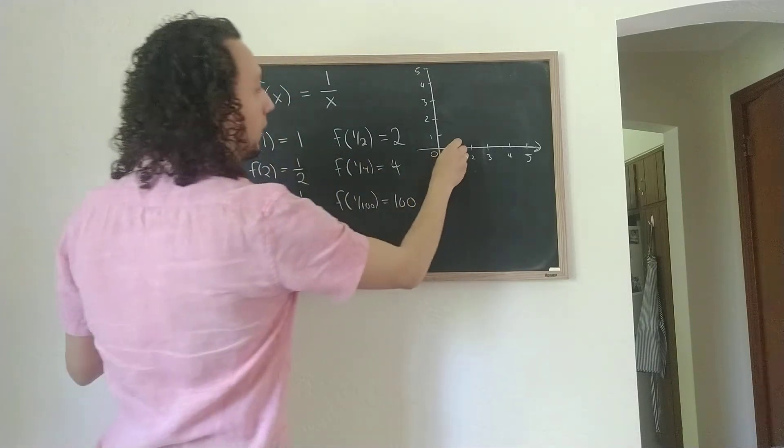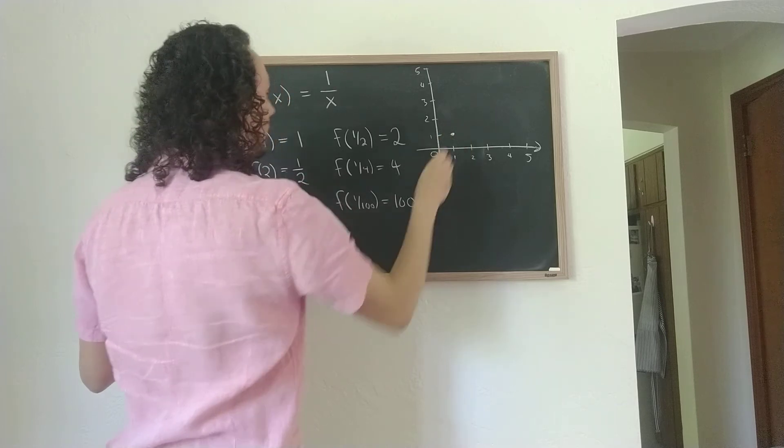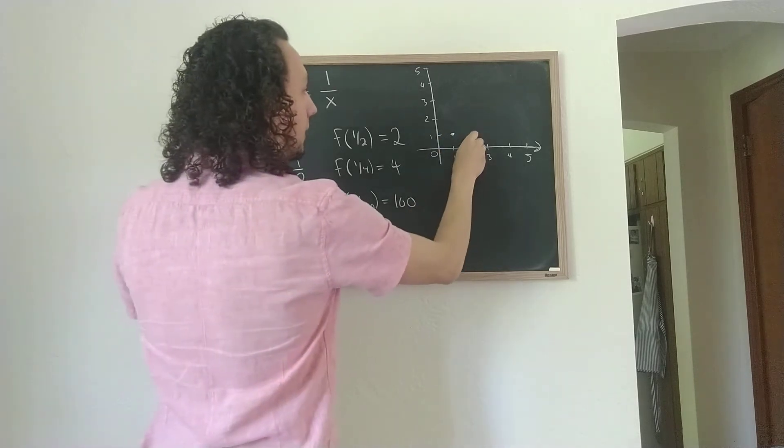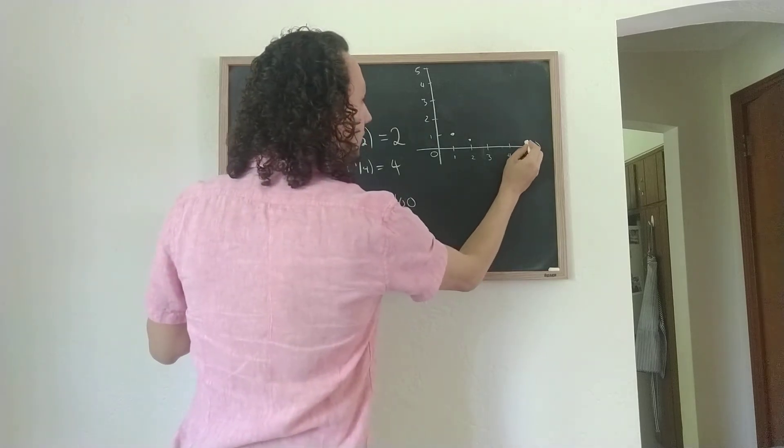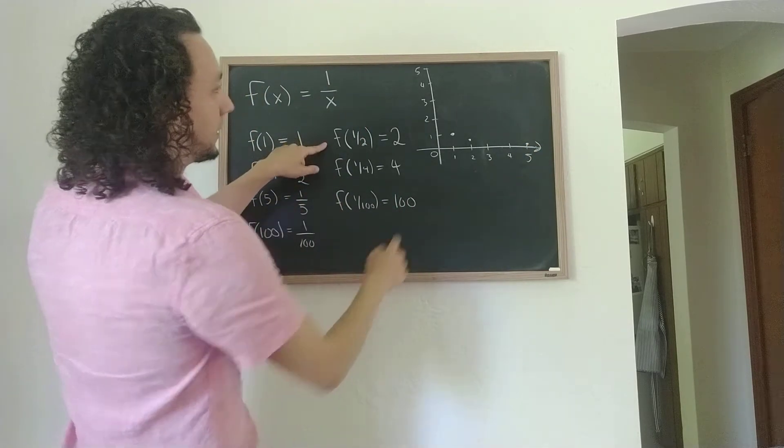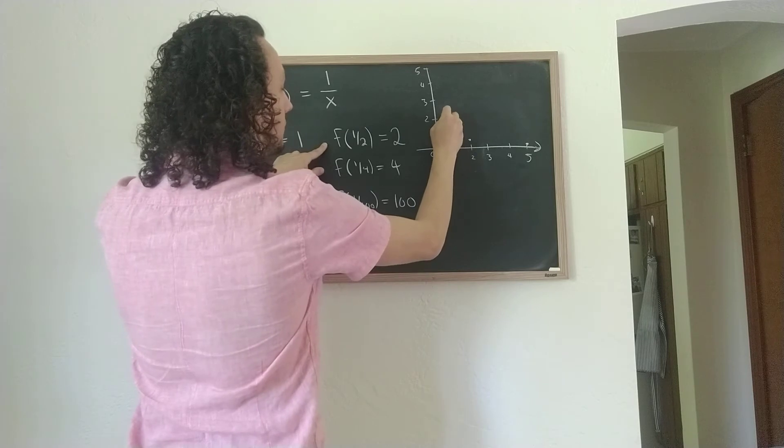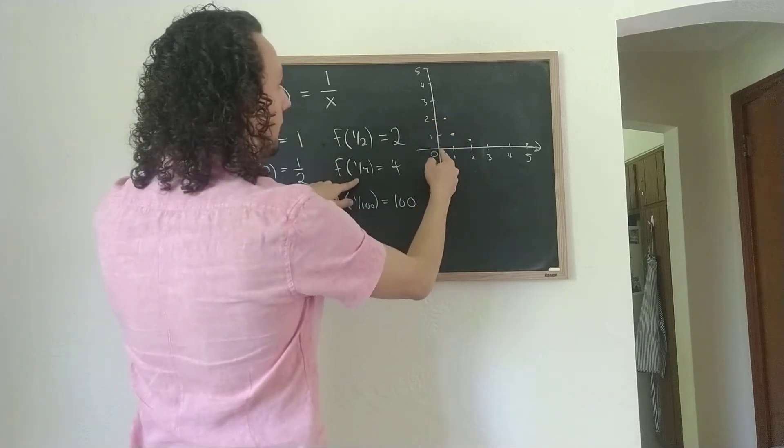So if I were to graph this function, we know that 1 maps to 1, and 2 maps to half, and 5 maps to a fifth. And we also know that half maps to 2, and a quarter maps to 4.